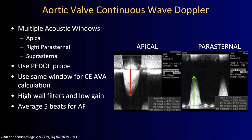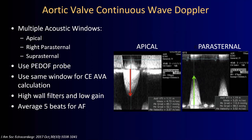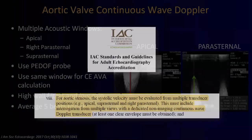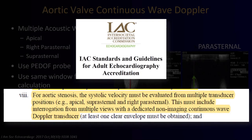A reminder: in patients with atrial fibrillation you need to average five consecutive beats. Our current ASE standards do recommend the use of the non-imaging probe and interrogation of multiple windows. More than 50% of elderly patients with AS have an angle between the aorta and the LV such that the apical window will not yield the highest velocities.